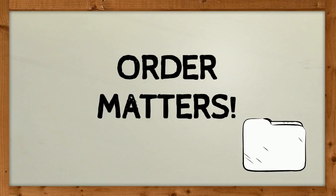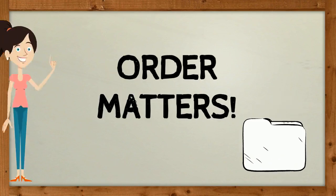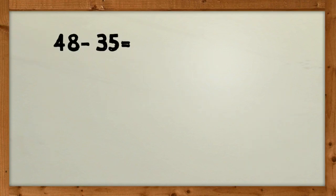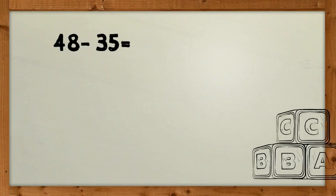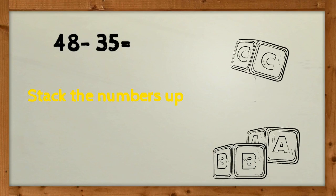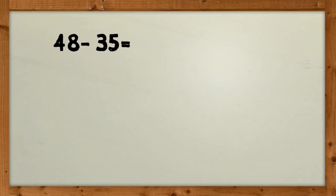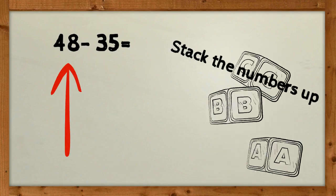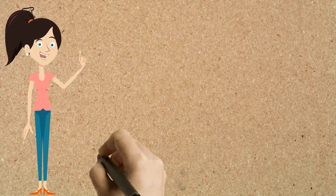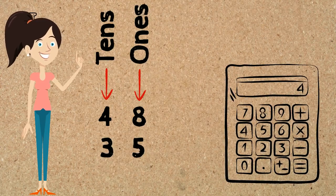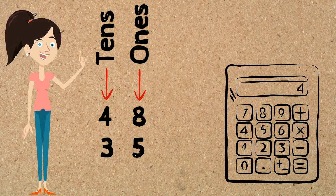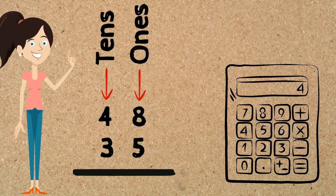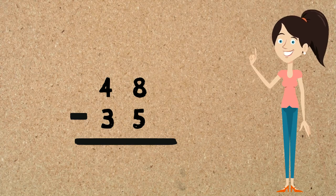With subtraction of multi-digit numbers, it's very important to always remember that order matters. The first thing we need to do is stack the numbers up, just like we did for addition. The bigger number — the number you're taking from — always goes on top, and the number you're taking away goes at the bottom. The ones places must be lined up in one column, with a straight line beneath them and a minus sign on the left-hand side.